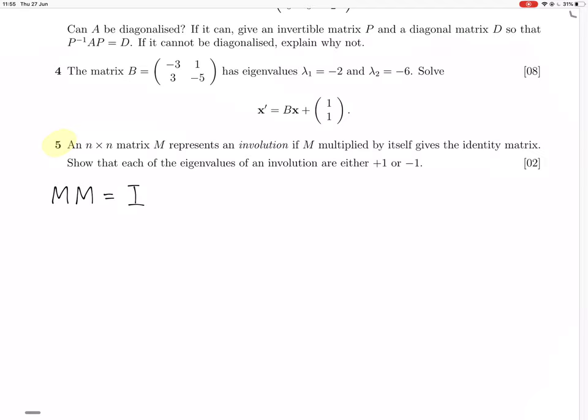So the eigenvalue equation would be like that, right? So we've basically got to show that if you have this, then either lambda equals 1 or lambda equals minus 1. So we can start by multiplying both sides of this by M.